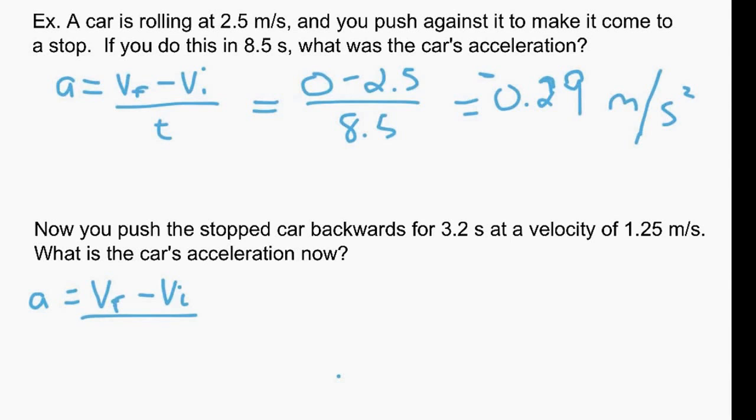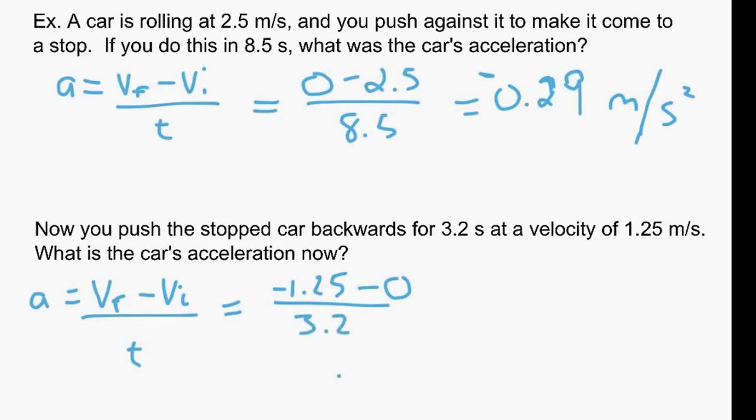Now we're going to take that stopped car and push it backwards. So what you have to be careful with this one is our final is still negative because we're going in the opposite direction. We're going backwards. So you have to put that velocity in as negative 1.25. Our initial was 0, so we don't have to worry about that. And our time is still 3.2. Okay? So when we do that on the calculator, we get 1.25 negative divided by 3.2 is negative 0.39.